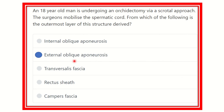Our final answer: the outermost layer of the spermatic cord structure is derived from the external oblique muscle — specifically, the external oblique aponeurosis.